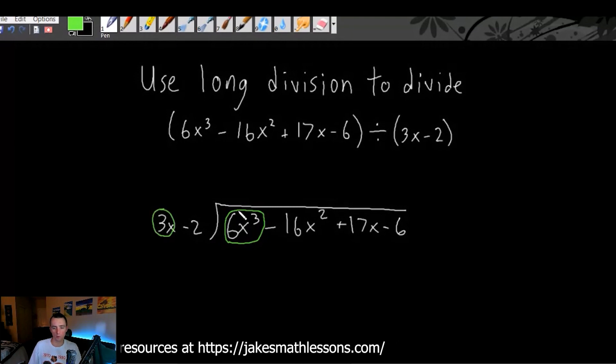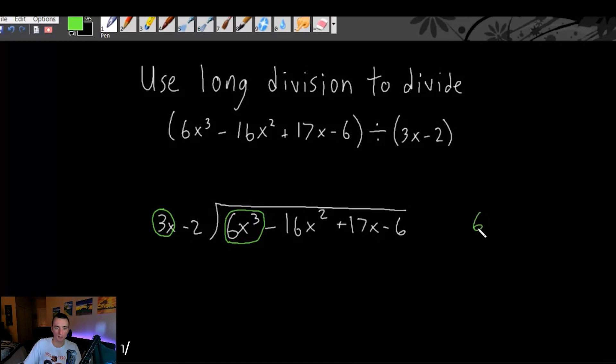Now we would want to do this one that's inside the divisor sign divided by this one. So 6x cubed divided by 3x.